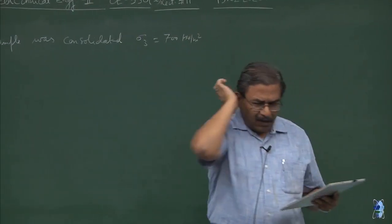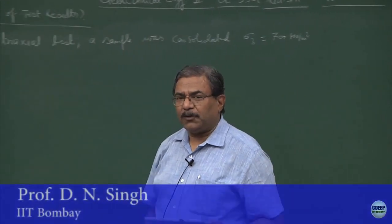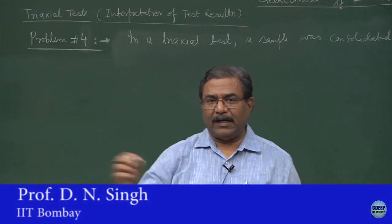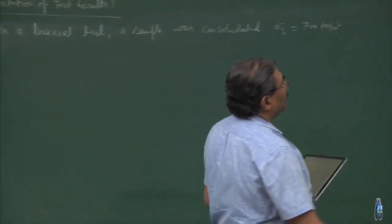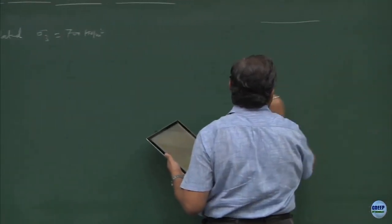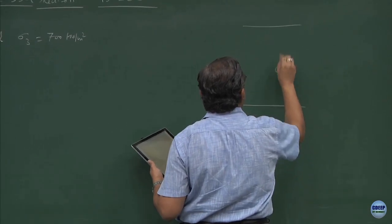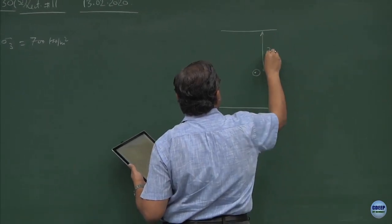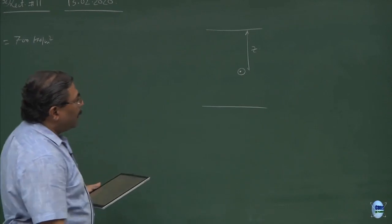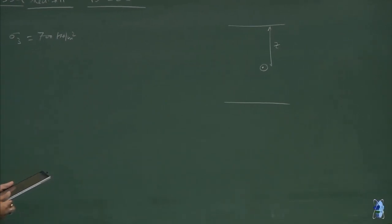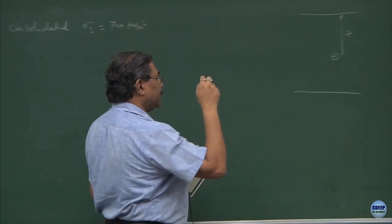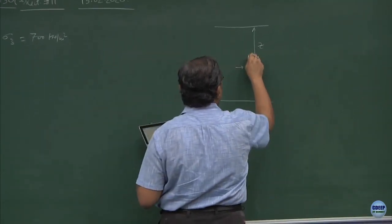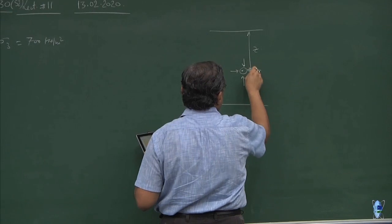Why are we so particular about selecting sigma 3 at 700, 200, or 300? Suppose you are taking out a sample from this point at depth z. What we are trying to simulate by doing a triaxial test is the state of stress which the sample is exhibiting at this location.